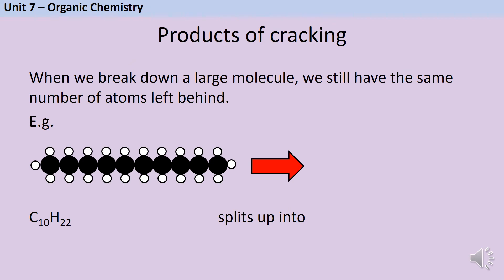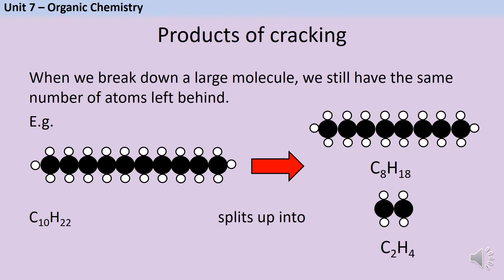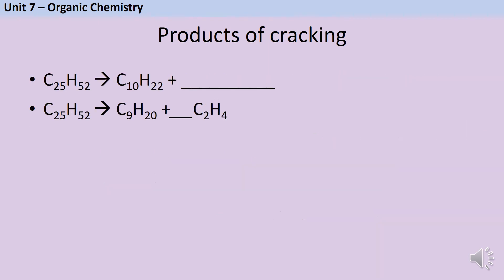In cracking, a large alkane is broken down to make a smaller alkane and also an alkene. You may be given symbol equations for these reactions and asked to balance them, but this is less challenging than it sounds. In the first type of question we're given one product and asked to work out what the second product would be — this is simply a matter of adding up the carbons and hydrogens on both sides of the symbol equation.